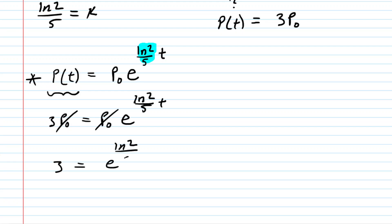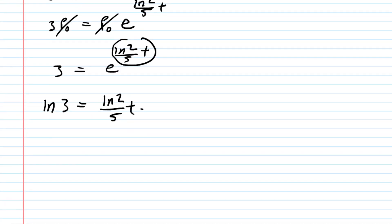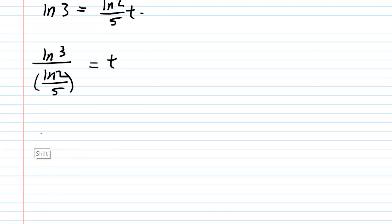And now we're getting very close to solving for the time required to triple the population. Take the natural log on both sides. You can bring this exponent down. You'll be multiplying that by the natural log of e, which is just 1. And then to solve for t, just divide both sides of this equation by the ln of 2 over 5. And then let's grab our calculators to see what that roughly equals. You should get approximately 7.9 years. And so that is the answer for the first question, the time required to triple the population.